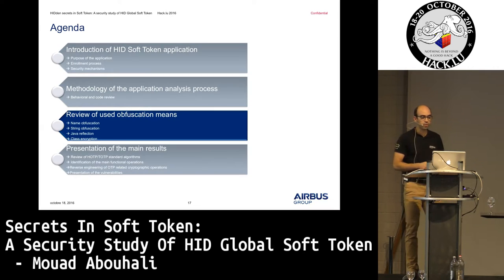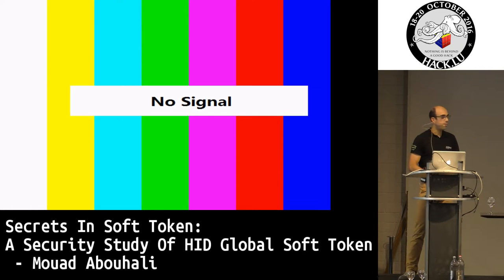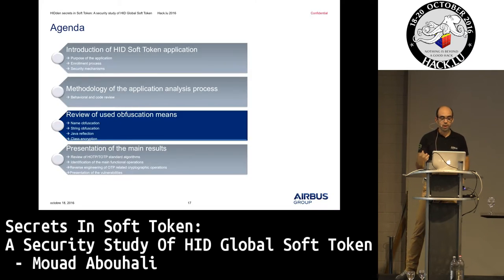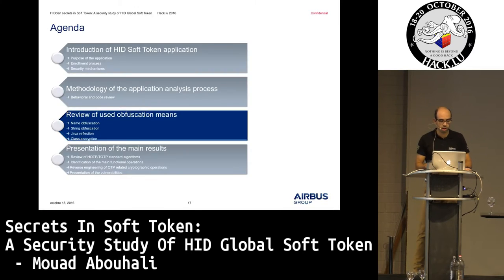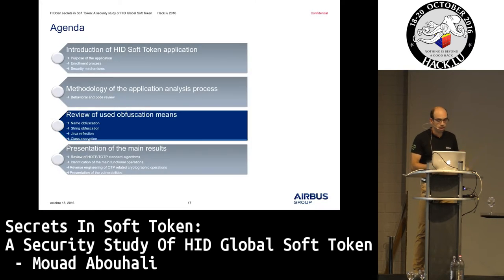We opened the box and the first security mechanism we faced was name obfuscation. It's a simple mechanism but can be very hard for an analyst to deal with. The idea is to replace all meaningful information embedded in an application with non-meaningful names, even using Unicode characters. Reading this kind of code is very, very hard. My main work consisted in translating these names into something meaningful — I refactored all the code to have readable output. That was the first mechanism.